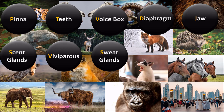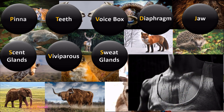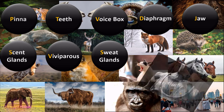The next feature is sweat glands. Almost all mammals have sweat glands and they secrete sweat, which has two main uses: thermoregulation — regulation of body temperature — and the secretion of some salts.